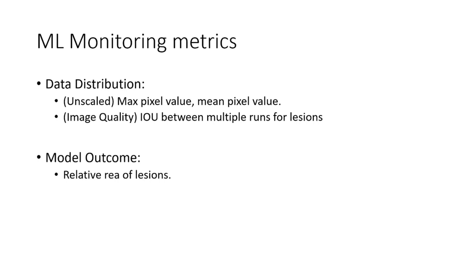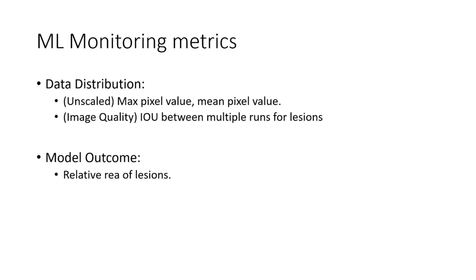To detect concept drift, we can look at metrics such as relative area of lesions — bright lesions and red lesions. The relative area would be the sum of all pixels belonging to the bright or red lesion divided by the total number of pixels. One important point: when monitoring at production time, you don't have ground truth, so there is no way to know what the actual semantic segmentations were. That is why ML monitoring metrics are generally different from training and testing metrics. In training and testing you use accuracy, but in ML monitoring you can never use accuracy because you don't know what the real outcome was.